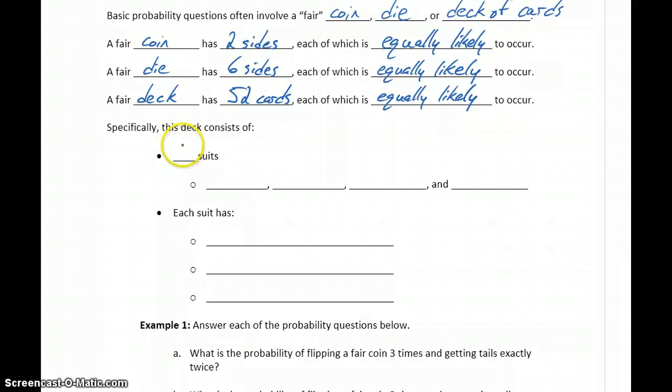So for instance we have in a fair deck of cards, four suits which consist of clubs and spades. So we have those two black suits and we have two red suits, hearts and diamonds.